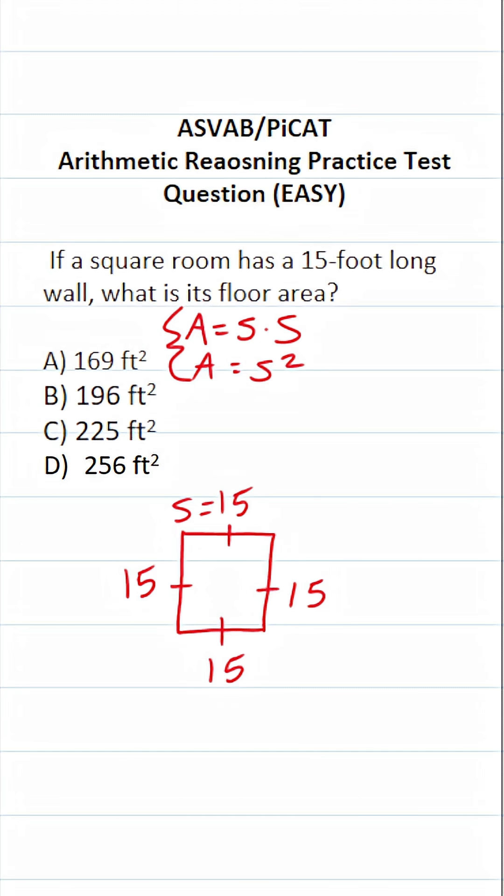And we know the side length of our square is 15. So this becomes area equals 15 squared. And again, on test day, if you're a little bit nervous and you don't have this memorized, I would work this off to the side. Again, we have 15 squared, which is the same thing as 15 times 15.